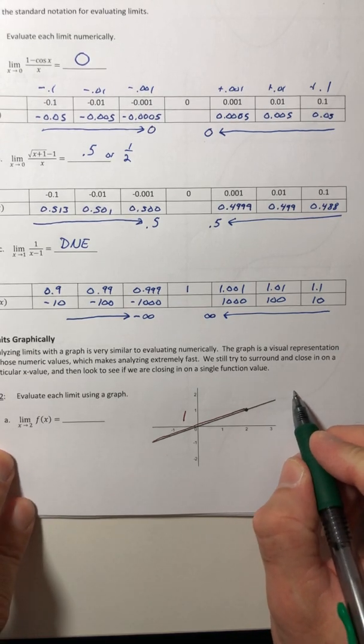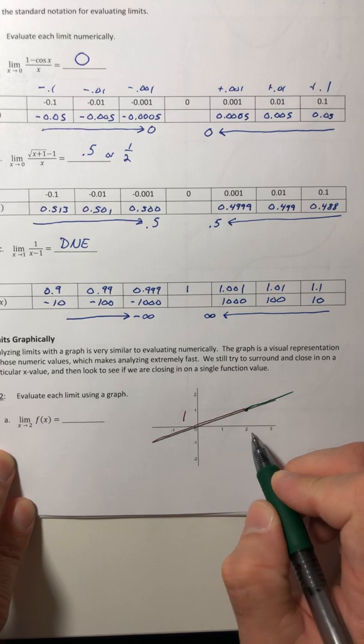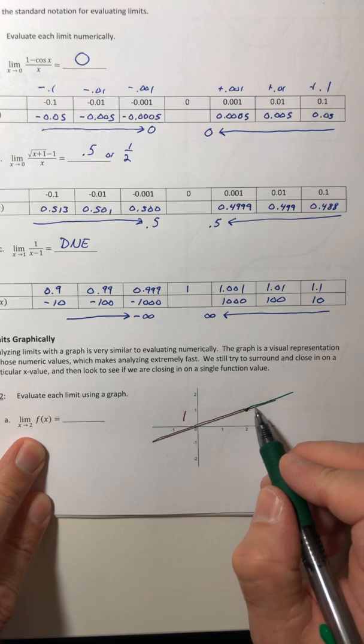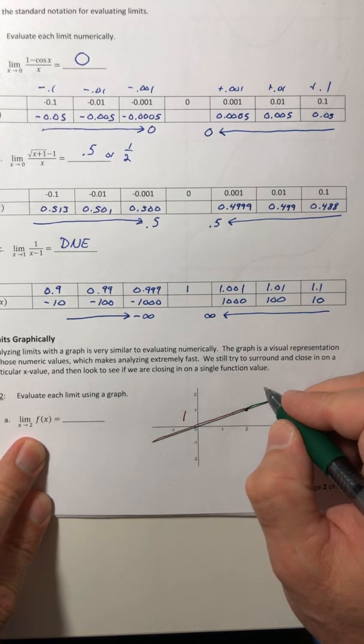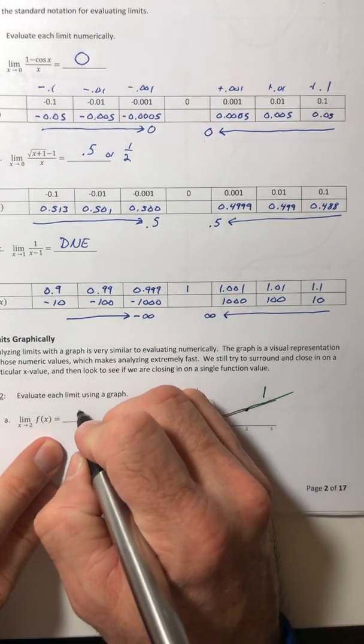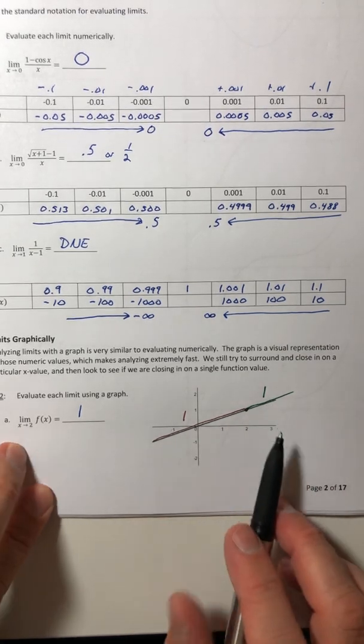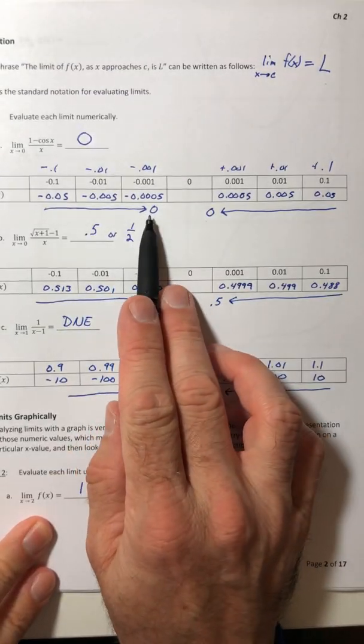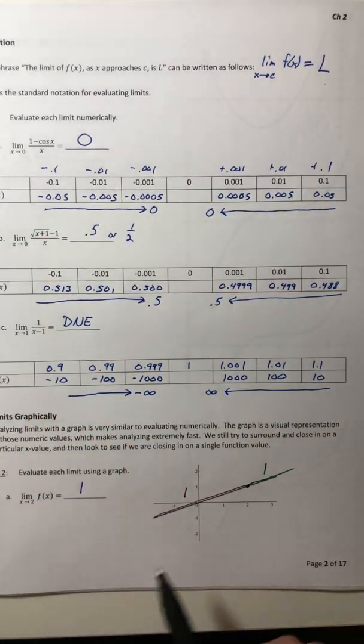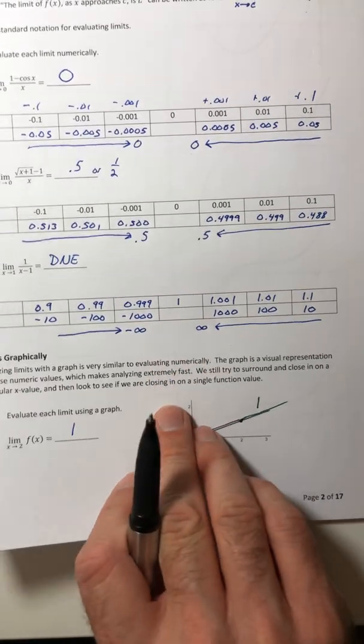Now, if I come in from the right side and trace and get all the way over to X equals two or as close to it as I can possibly get, what Y value does it look like I'm going to run into? It looks like I'm going to run into one as well. So the limit is going to be one. You're approaching the same thing from both sides, just like you did on the table, from the left and the right. If they're the same value, that's what the limit equals. That's what the function values are approaching.